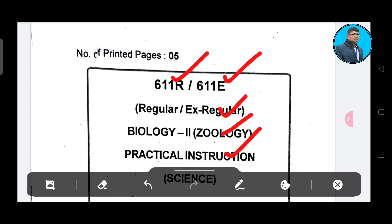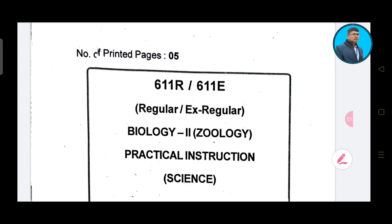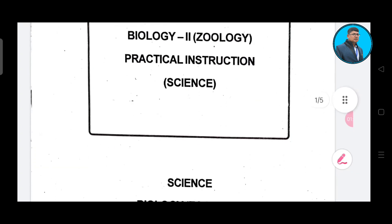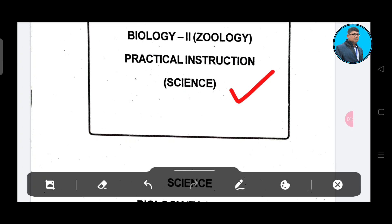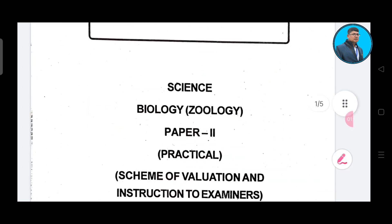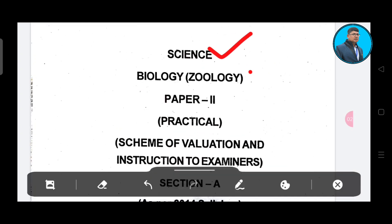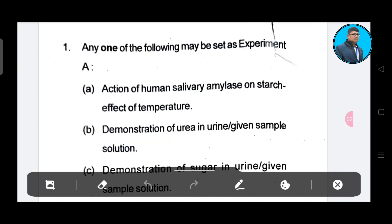Zoology practical instruction. Here comes science — biology, zoology, paper 2, practical. Scheme of evaluation and instruction to examiner. This is the question: anyone of the following may be set as an experiment.